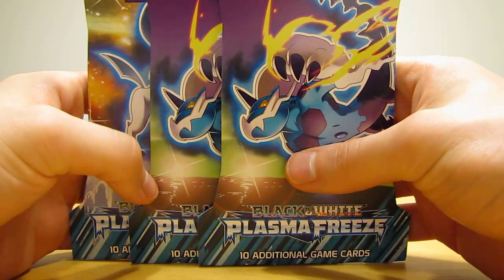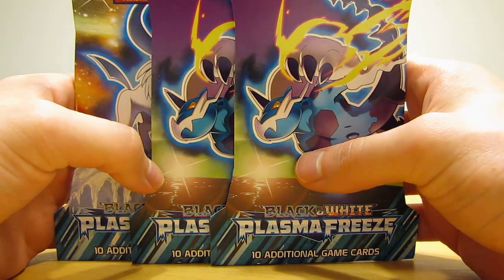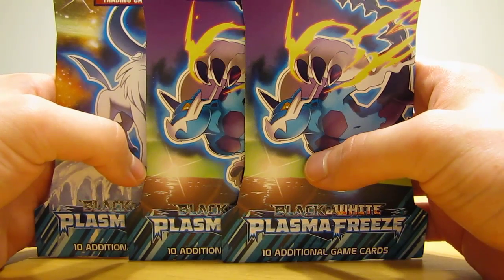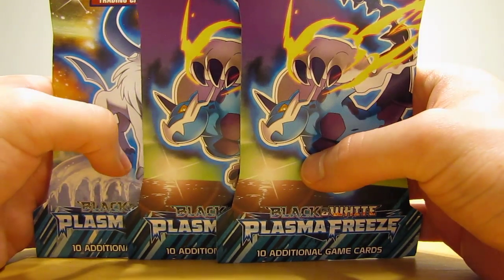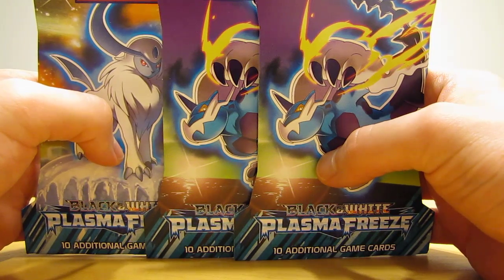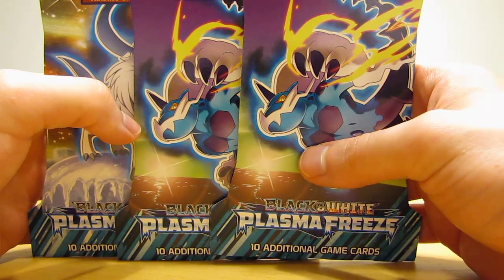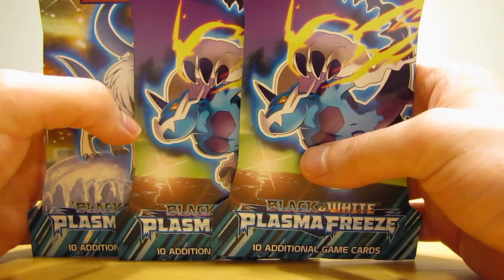Hey YouTube, this is Primetime Pokemon. In this video I have three Plasma Freeze Pokemon booster packs to open up. Two have Thunderous and then one has Absol on the front. I purchased these three packs from Target and they were $4.19 a piece.